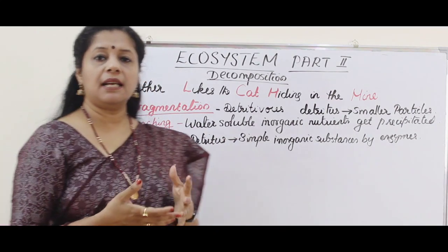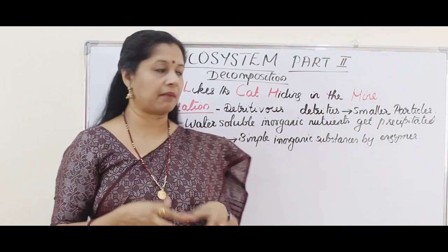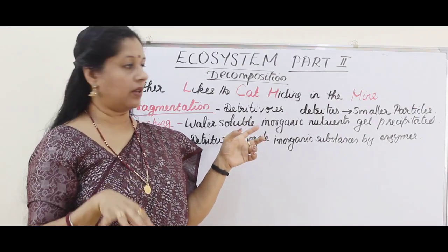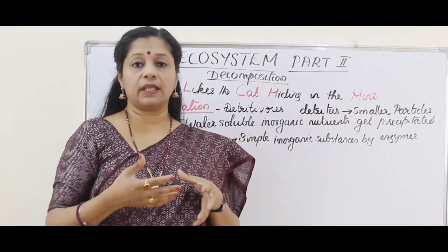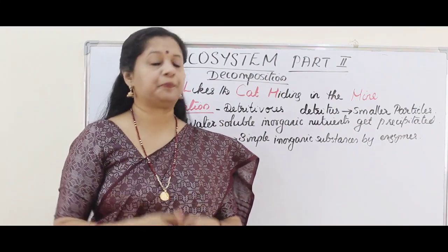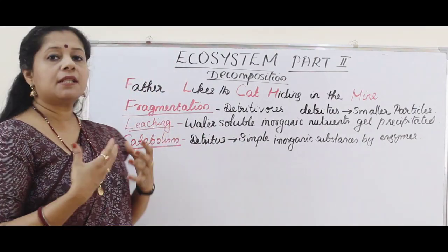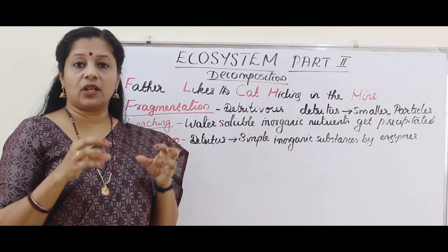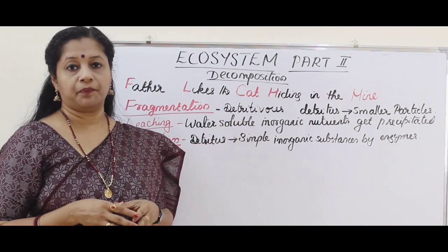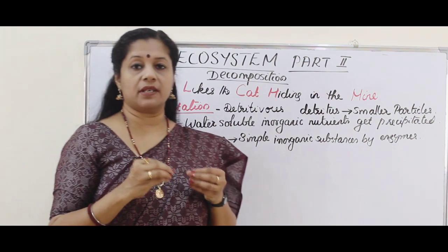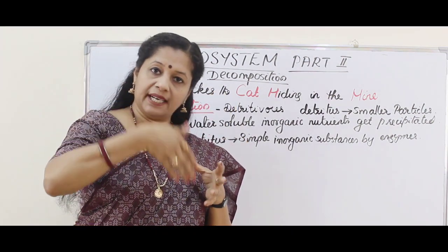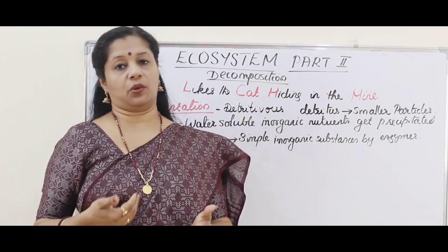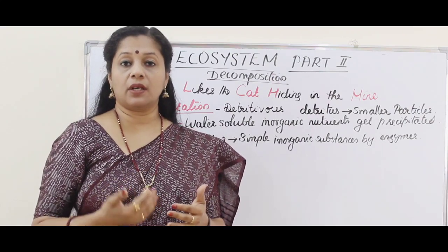First is fragmentation. As the name indicates, it means making larger substances into simple fragments. Detritivores act on the detritus fallen on the soil and make them into smaller particles so that further enzymatic action will be easier. During this breaking-down process, some nutrients or inorganic substances that are water-soluble will percolate down into the soil and get deposited as salts — becoming unavailable. That sedimentation process is called leaching.